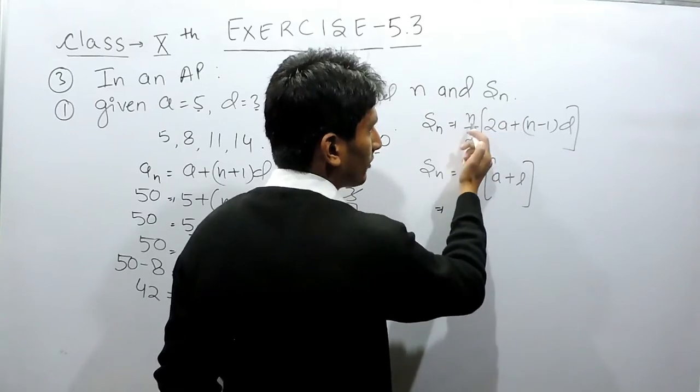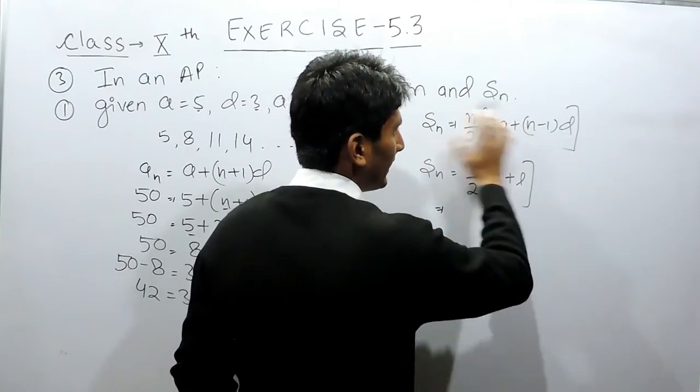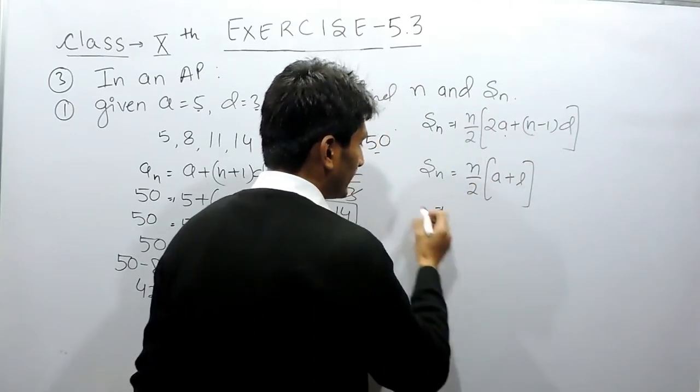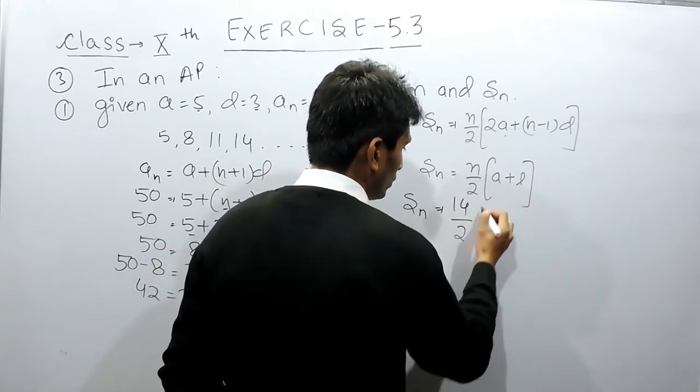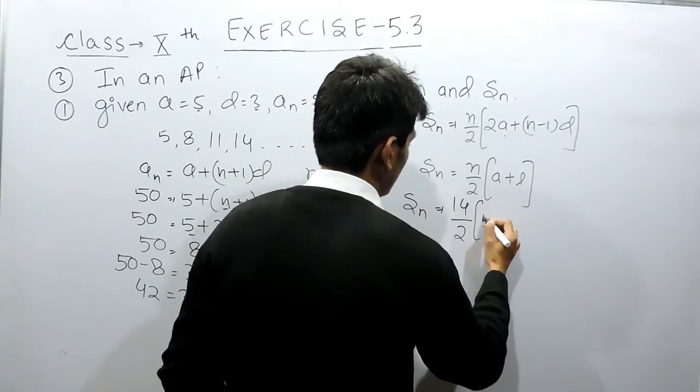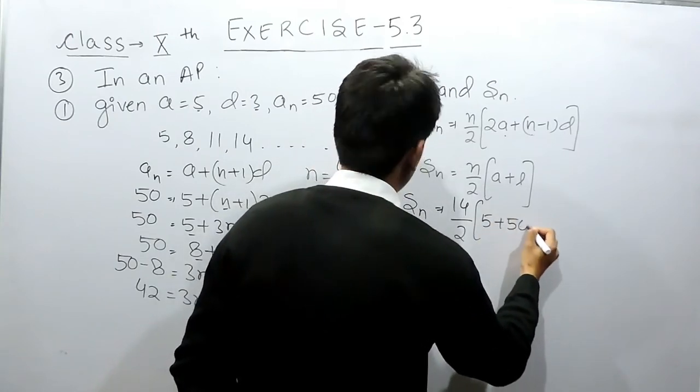You have to substitute the values of N, A and D, and you have to solve this and you will get your answer. Now here the number of terms are 14 by 2. The first term is 5 and the last term is 50.